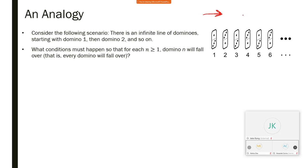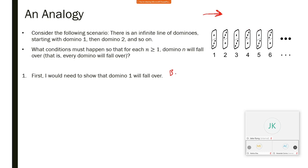What conditions would we need so that we can guarantee that with one push, every single domino falls over? You would need, first, to push over domino one, because if you pushed over domino four, that would just be domino four, domino five, domino six, and all that stuff falls over. So you would need, first and foremost, that domino one falls over. This is what's known as the base case.